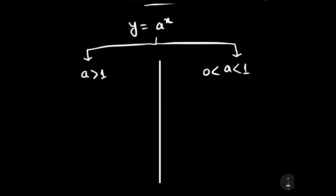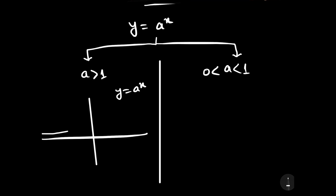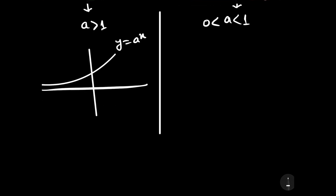Let us analyze the graph. When we draw the graph of y equals a to the power x, where a is greater than 1, it shows that when the value of x reaches minus infinity, the value of y reaches 0. That is, a to the power minus infinity tends to 0 — not approximately equal to 0, but it tends to 0.